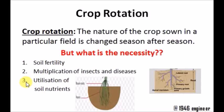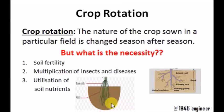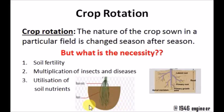Crops are called autotrophs because they have the ability to synthesize their own food. Crops absorb nutrients like nitrogen, phosphorus, and potassium present in the soil. Each and every plant absorbs these same nutrients — nitrogen, phosphorus, and potassium — but their proportions vary. So if we sow crop X every time and crop X needs more nitrogen, it will completely deplete the nitrogen present in that soil.